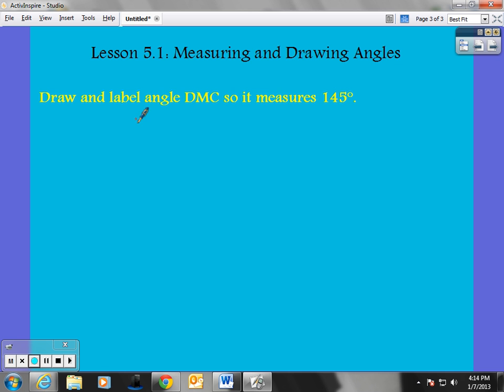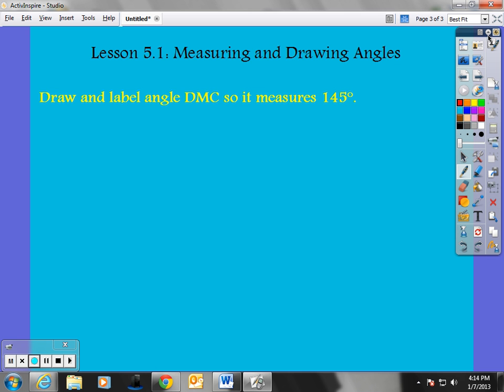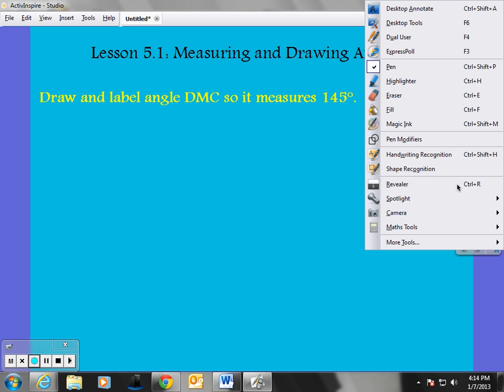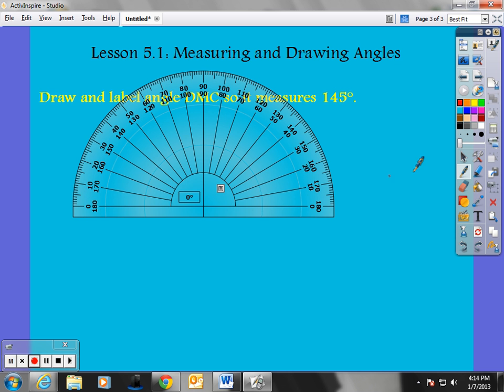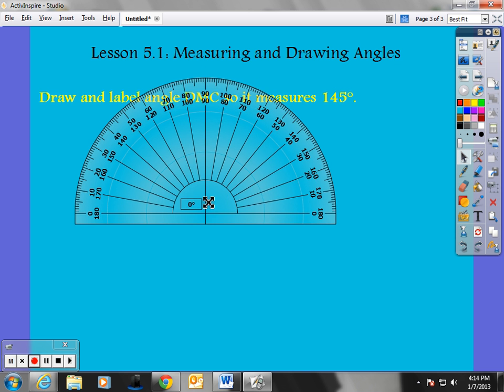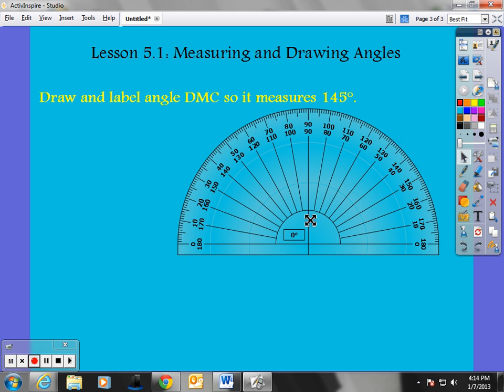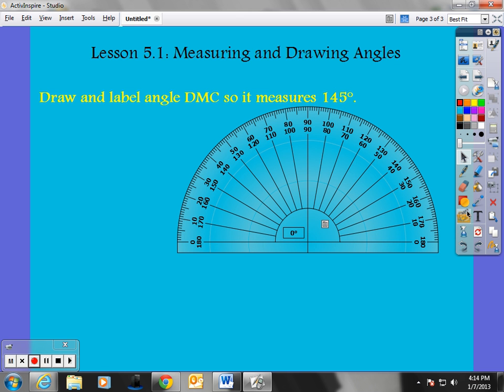Take a look at draw and label angle DMC. So, it measures 145 degrees. So, if we're thinking about a possible quiz question or something like that, I would have to also draw and label an angle. Now, using your protractor, the bottom part of it, you can use that as a straight edge. So, if I'm going to draw an angle. Now, this is 145 degrees. It's going to be an obtuse angle.